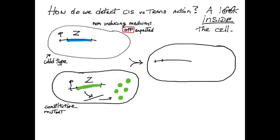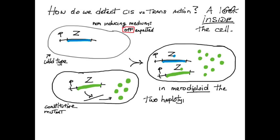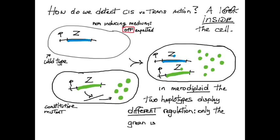Now, let's put both wild type and mutant operons in a single cell to form a merodiploid. The two haplotypes display different regulation, indicating cis action of the locus affected by the mutation.